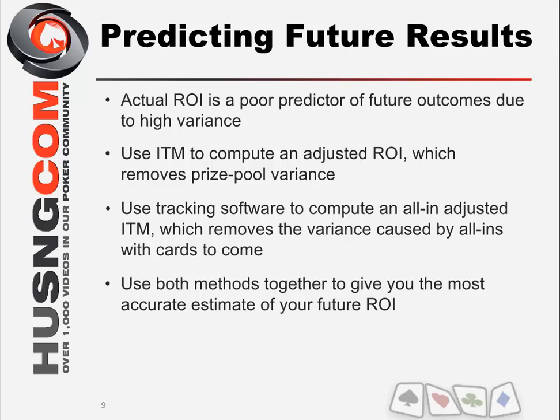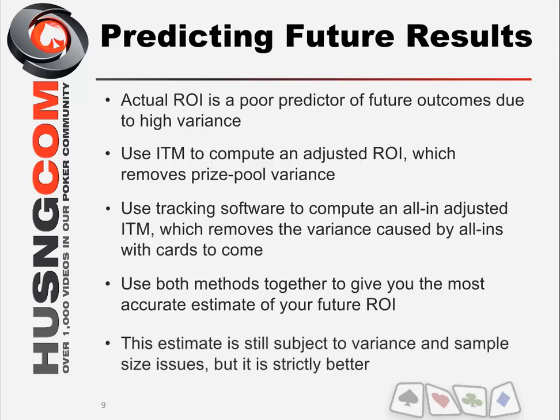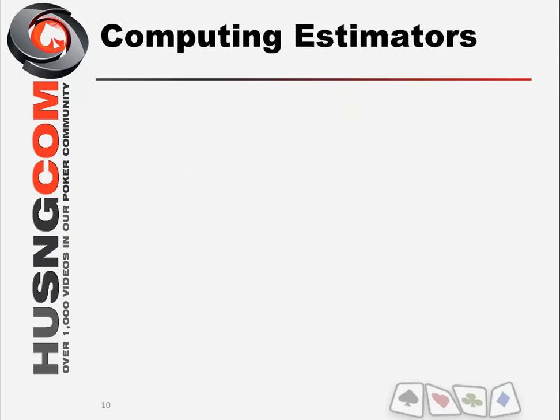But at least you can get closer. It's still subject to variance and to sample size — the more sample you get, the better and quicker you'll get a good estimate of your future ROI. But using this method will make the most of small samples. You'll get the most information from small samples by removing these two elements of variance, so it is strictly better for the purpose of predicting your future results.